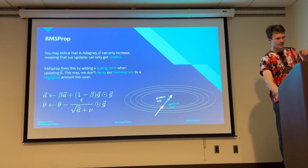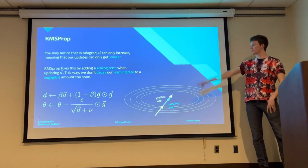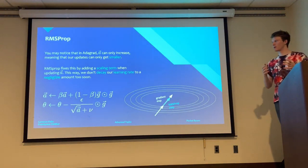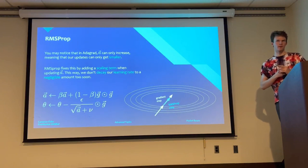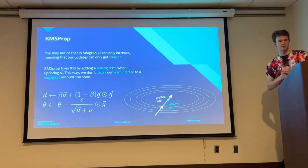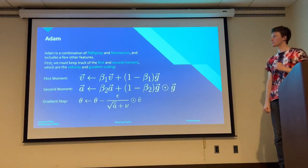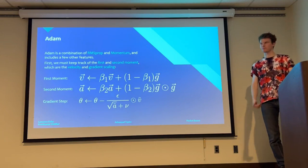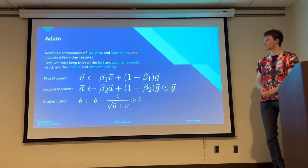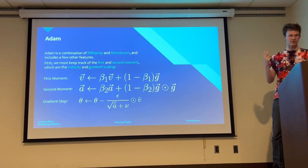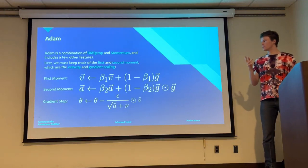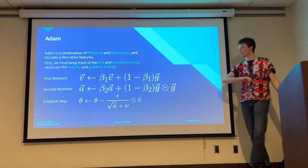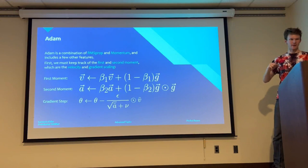One thing you might notice about Adagrad is that A will only ever increase, so our steps get smaller and smaller. RMSProp is basically Adagrad but with a beta term that allows you to decrease A over time, similar to momentum — you have a little bit less memory and you're not remembering steps from way early in training.